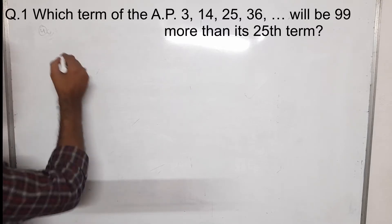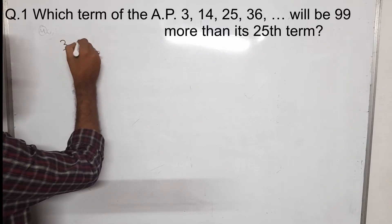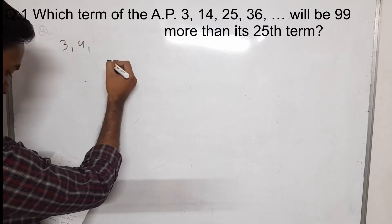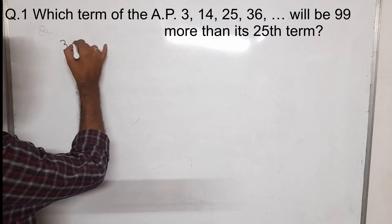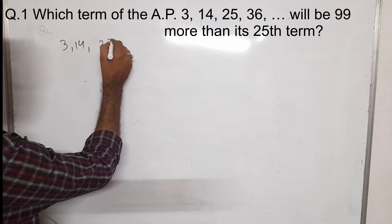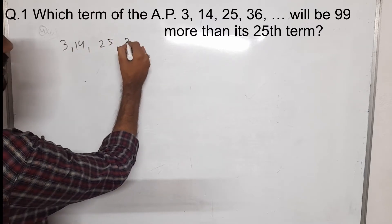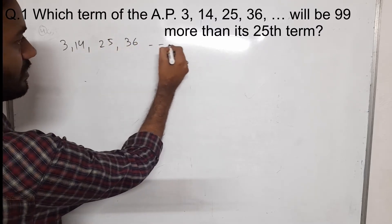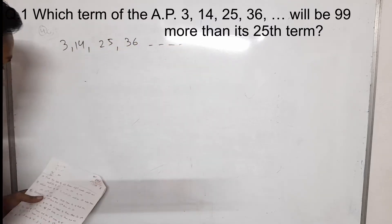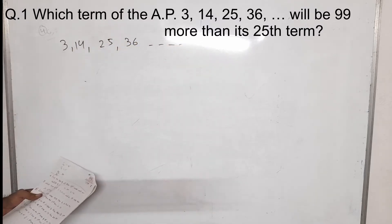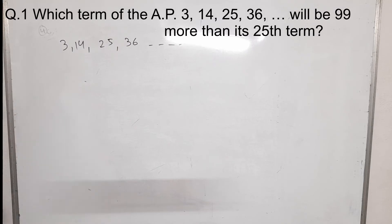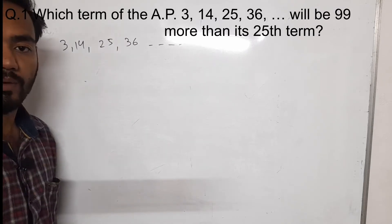The first question is: which term of AP 3, 14, 25, 36 will be 99 more than its 25th term?